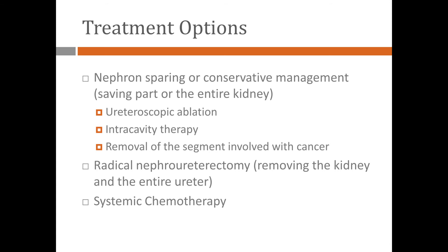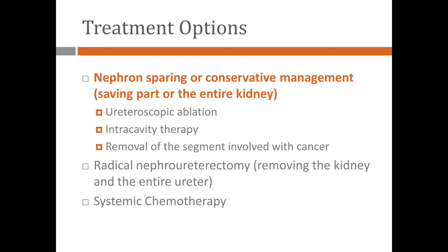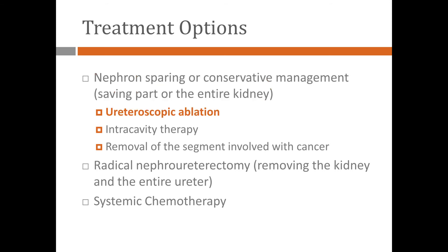Number one is what I tend to call nephron-sparing or conservative management. We try to save the entire kidney or part of the kidney and preserve kidney function as much as possible. For that, we use the ureteroscope technique — we try to ablate and destroy the tumor. Sometimes we give chemotherapy or immunotherapy in the pelvis of the ureter.